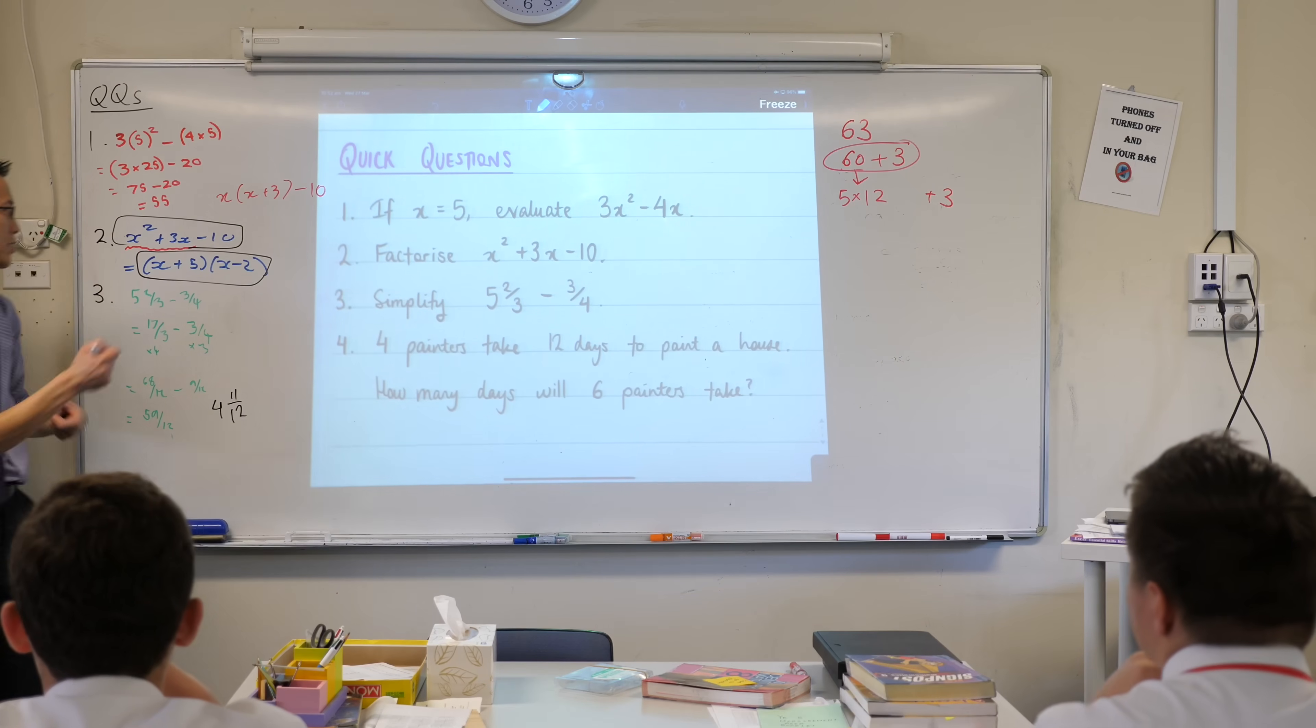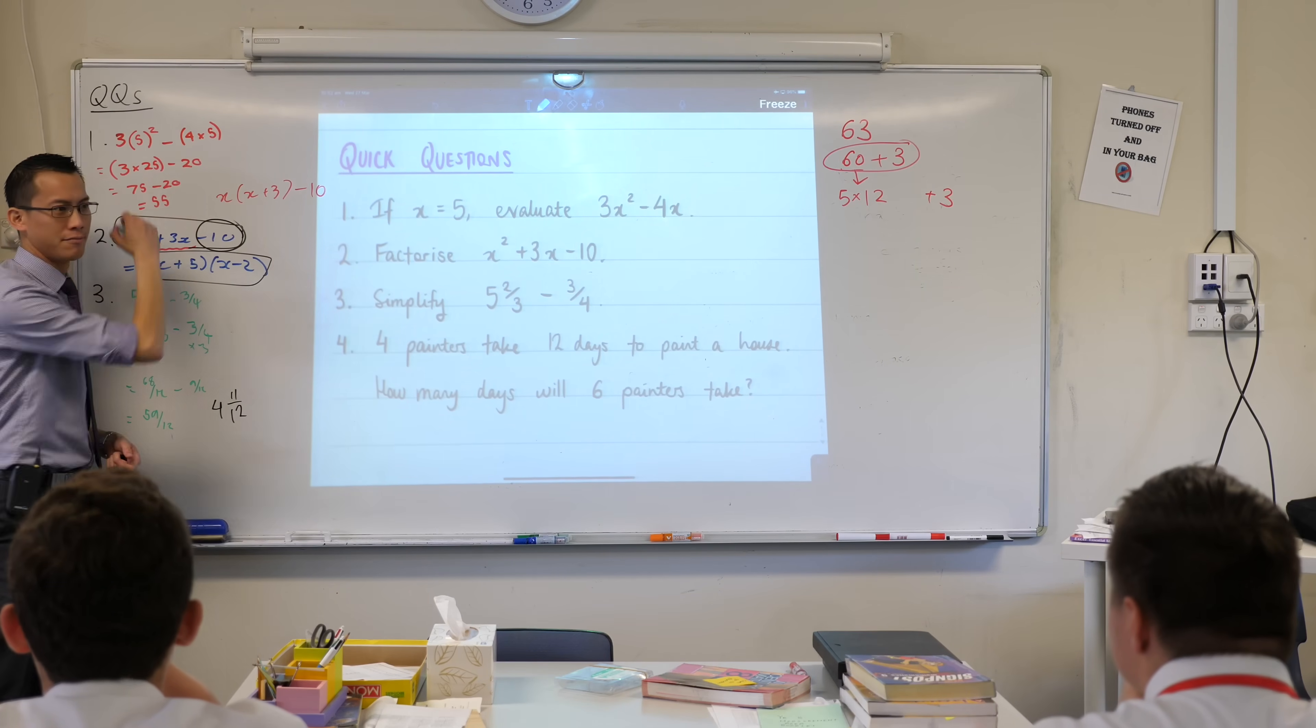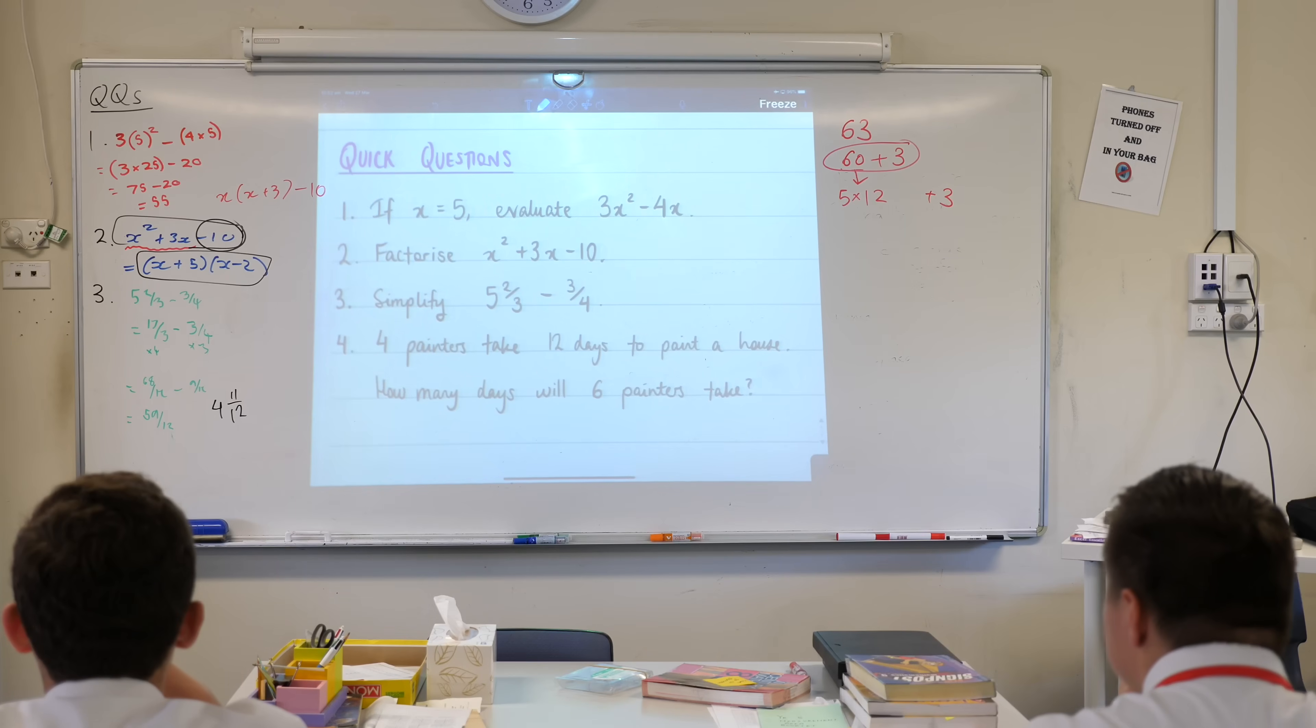But just suppose you knew what the x-intercepts were and you wanted the y-intercept. That's also something that's useful when you graph, right? Which one of these is easier to read the y-intercept off? It's actually the first one because the y-intercept is right there. You have to do sweet nothing to it. You're like, bam, there it is. So the word's simpler, it's kind of what we call context dependent, right? It depends on what you want to do next because there's no next.